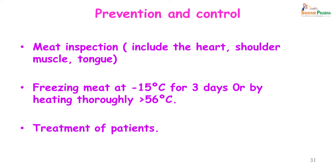Prevention and control involves regular meat inspection including the heart, muscle, shoulder and tongue — these are the parts which must be examined for the presence of cysticercus. Meat should be frozen at minus 15 degrees for 3 days and should be well cooked, with temperature more than 56 degrees Celsius for a sufficient period. The best approach is to cook beef or pork in a pressure cooker for a minimum of about 15 minutes. Treatment of patients and preventing open defecation are also important measures to prevent and control infection due to Taenia saginata and Taenia solium.